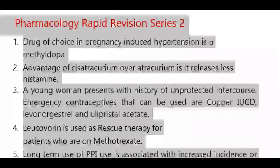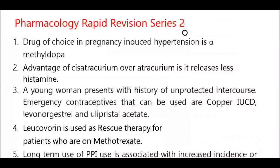Hello friends, we are starting Pharmacology Rapid Revision Series 2. Drug of choice in pregnancy-induced hypertension is alpha-methyldopa. Advantage of cisatracurium over atracurium is it releases less histamine.